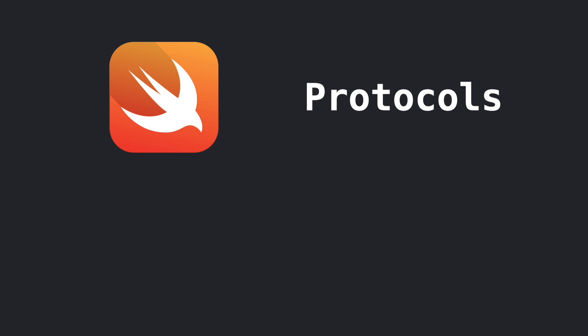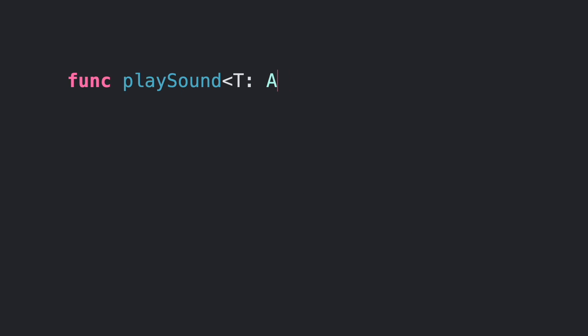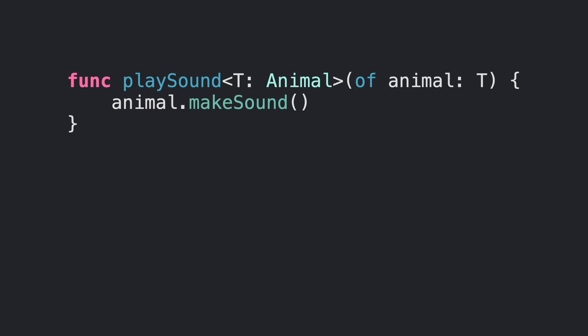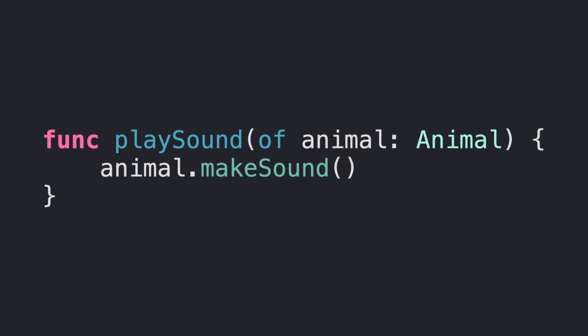In Swift, we have protocols that are equivalent to interfaces in other languages. You can use a protocol in two ways. One is as a generic constraint for a type parameter, but another simpler approach is just using the protocol as a type. In this context, the protocol is actually an existential type. An existential type is a simple and abstract type that can hold any value of any conforming type dynamically at any point in time.